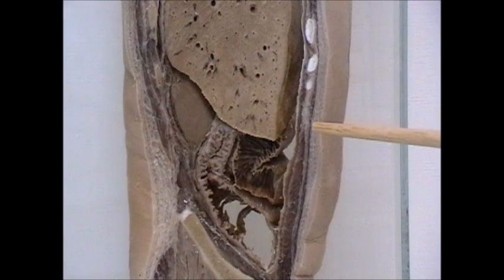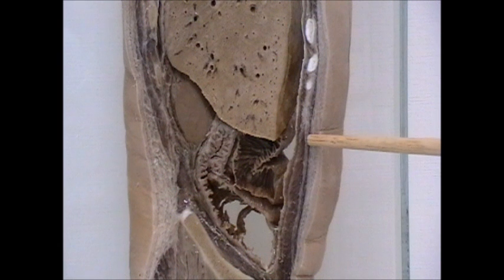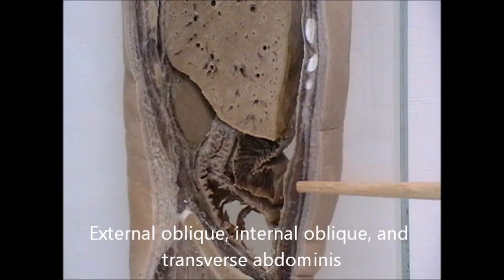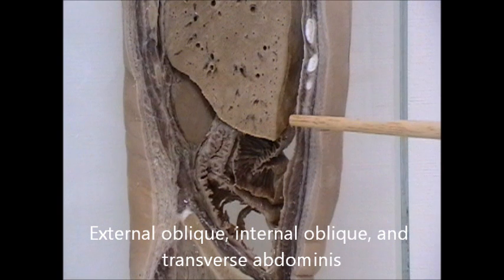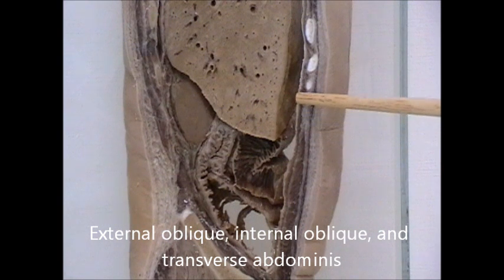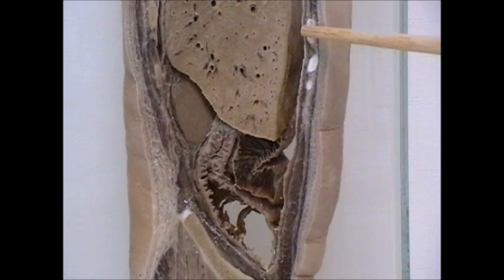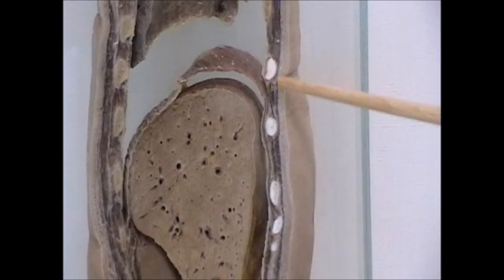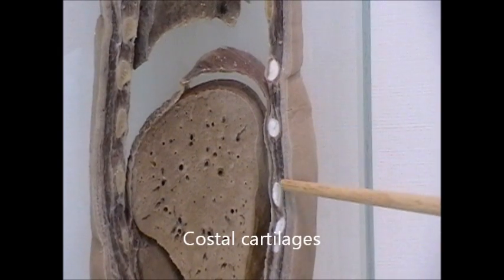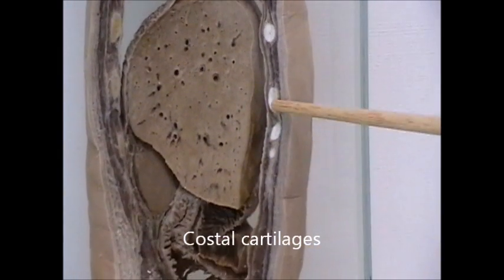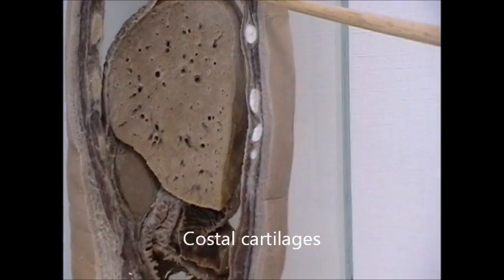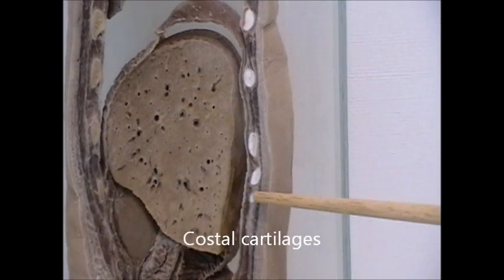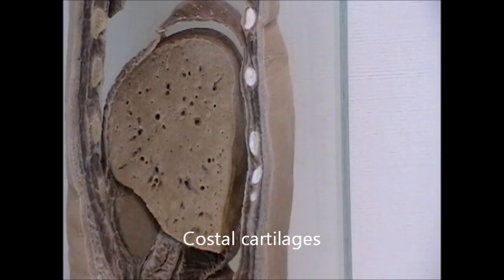In the anterior abdominal wall, you can see the three muscles here: the external oblique, the internal oblique, and the transverse abdominus muscle. Note that the transverse abdominus muscle continues superiorly with the diaphragm. These are sections in the costal cartilages at the costal margin.